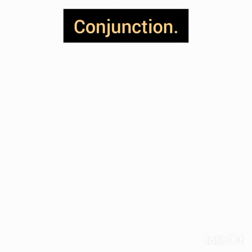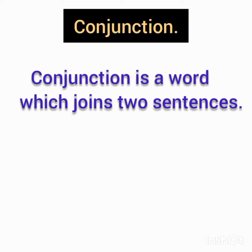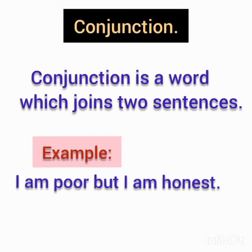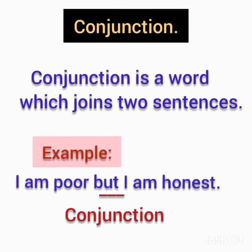Conjunction is a word which joins two sentences. Example: 'I am poor but I am honest.' Here, 'but' is the conjunction.